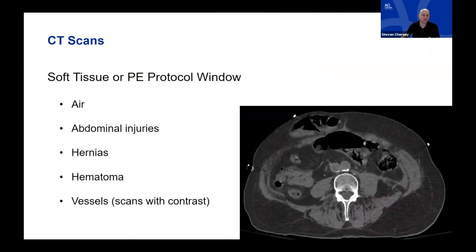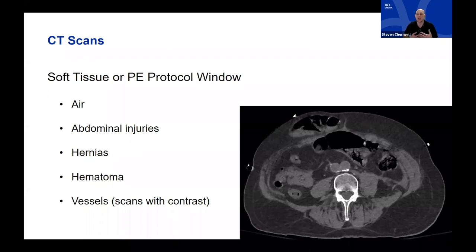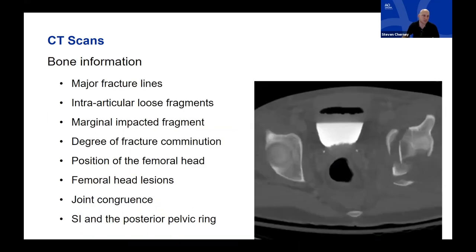I find it helpful to look at soft tissue or trauma protocol windows before bone windows on CT. The soft tissue windows give you more information — better contrast between tissue types. In a cross-section higher up in the abdomen, you see other injuries: air if it's an open injury, abdominal injuries, ventral hernias, hematomas — which are fairly easy to pick up — and if it's a contrasted scan, a good idea of what the patient's vessels look like.